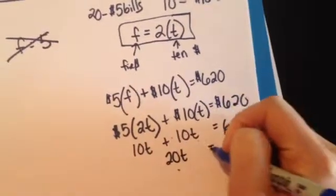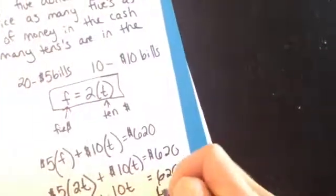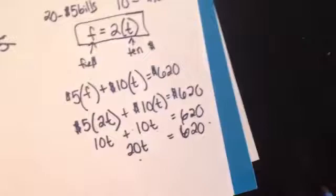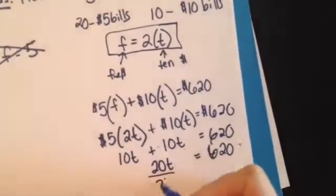I have 20T equals, sorry, my paper's moving, $620. And then, to get T by itself, I'm going to divide by 20.